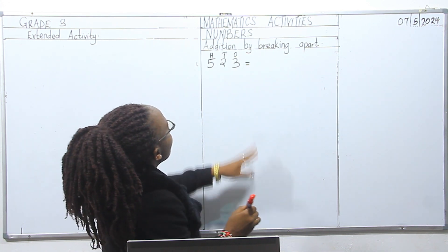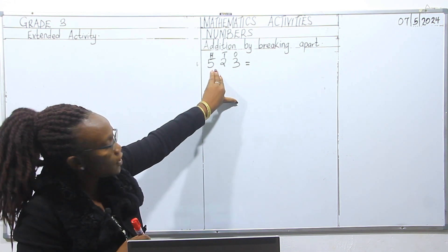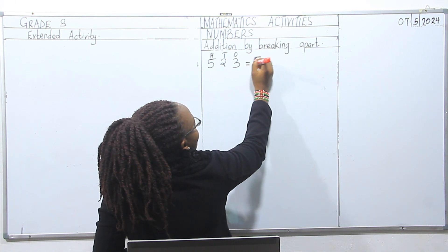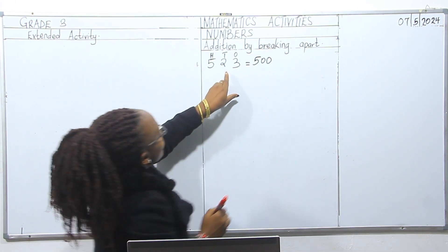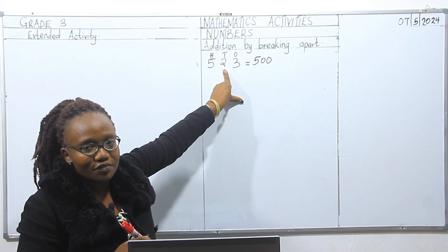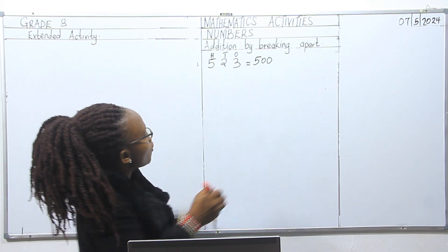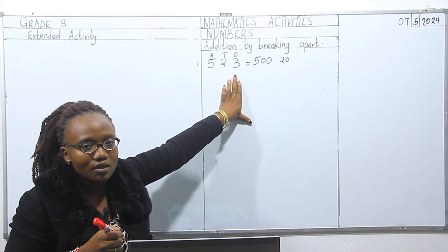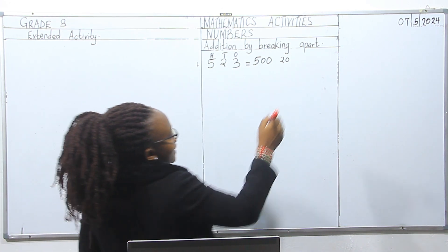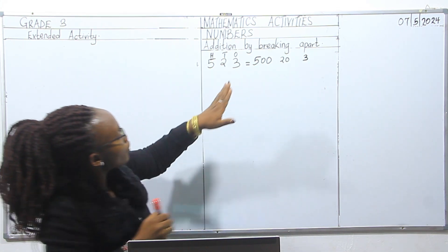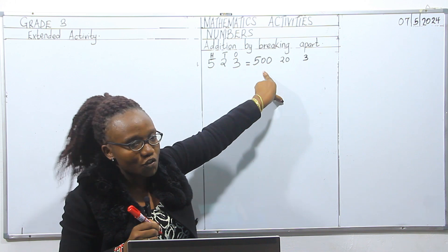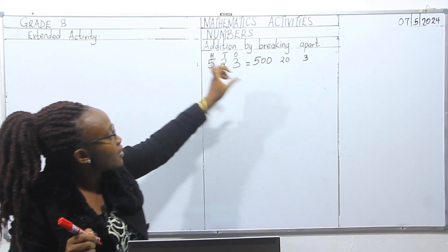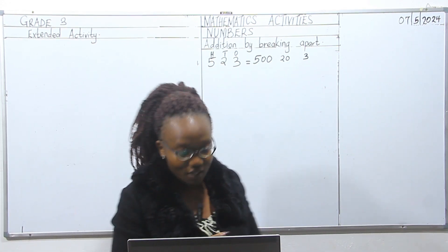So we start with our number five — the place value of five here is hundreds, so we write five hundred. Then we have two in the place value of tens, so this is going to be twenty — meaning two tens. Lastly, we have three in the position of ones, so we write three. We have broken down 523 into five hundred, twenty, and three.